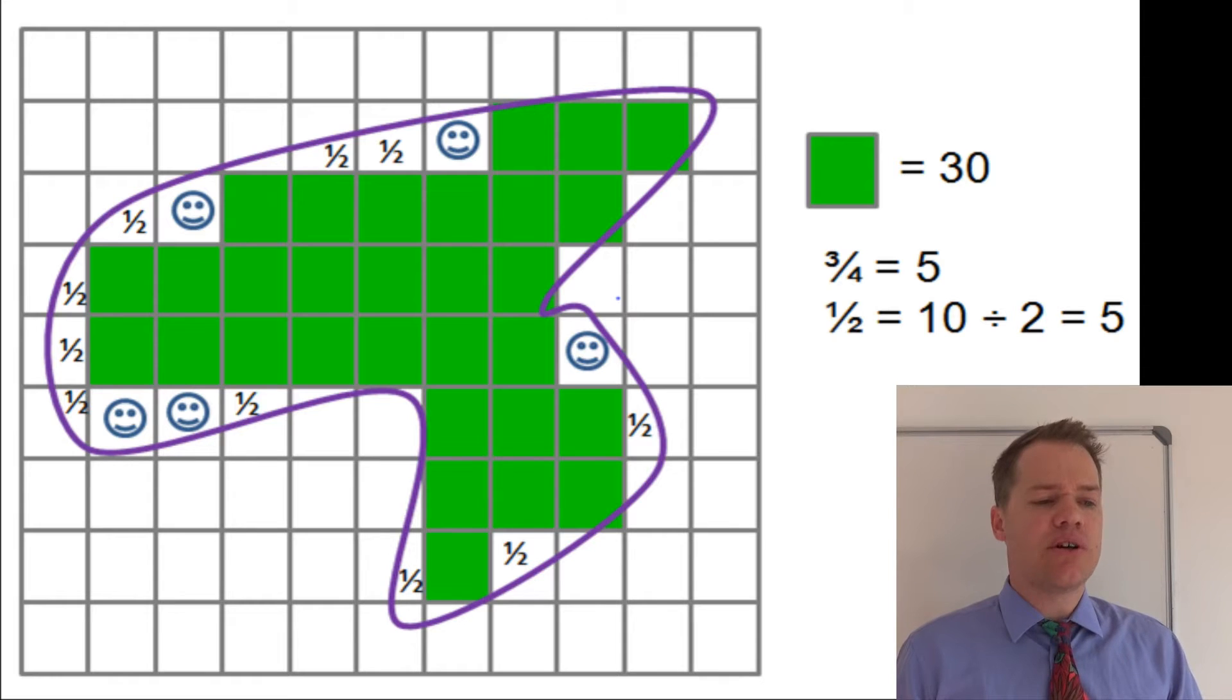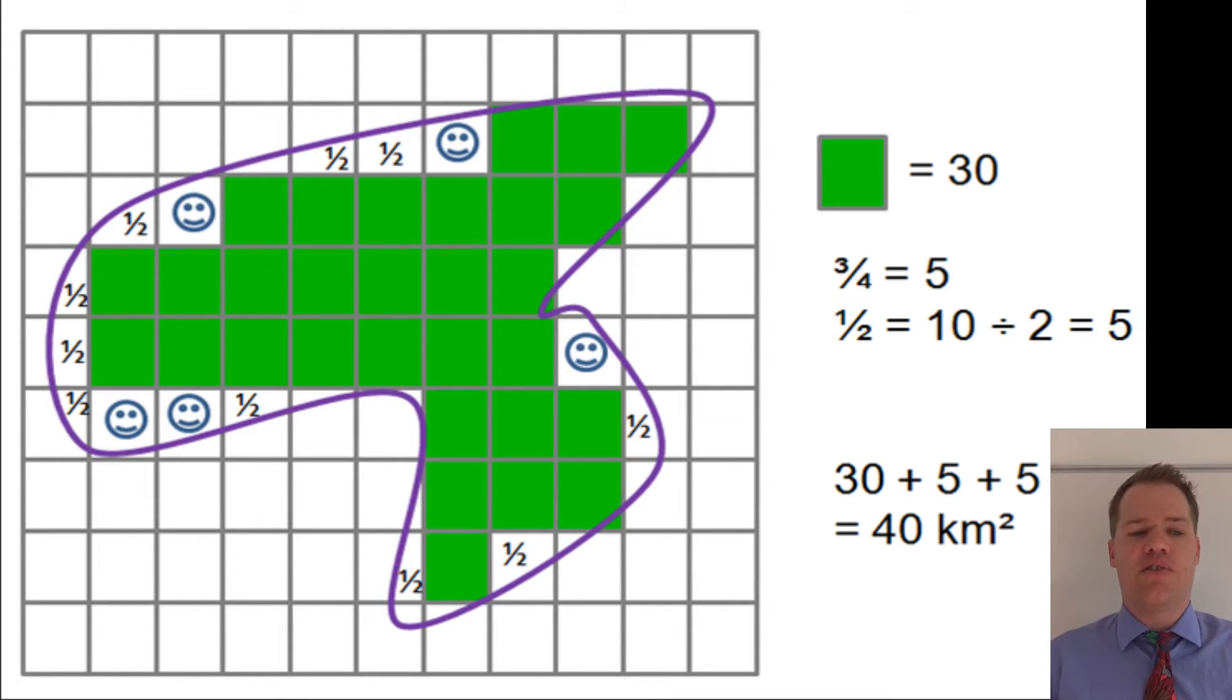Okay, so we have 30 full squares, we have another 5, that's 35, and then we have 5 squares which are about three quarters the size of a full square. And so you will say 30 plus 5 plus 5, and the answer is 40 square kilometers.